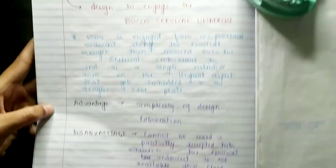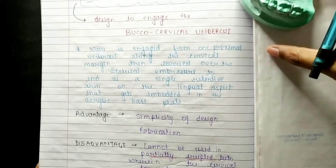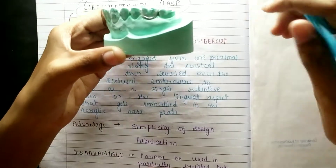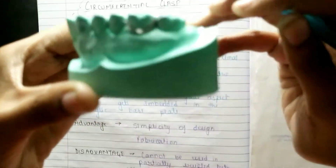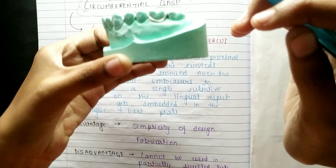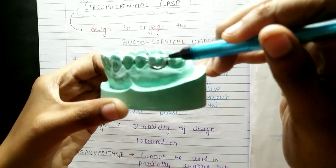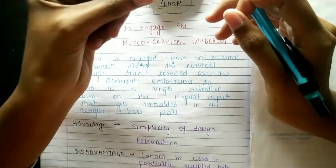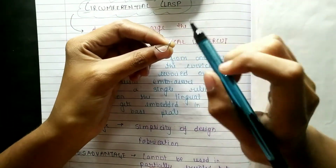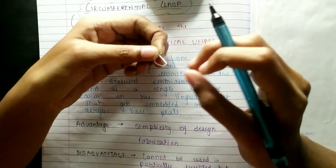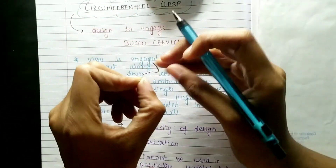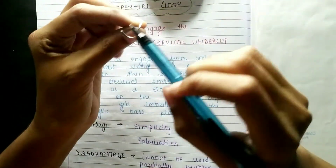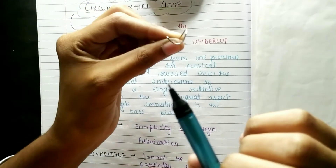So now, see the fully erupted tooth — remember this. Now see the C clasp. Why do we call it a C clasp? Because if you look at its shape, it forms a 'C'. It is a C shape, and that is why we call it the C clasp.